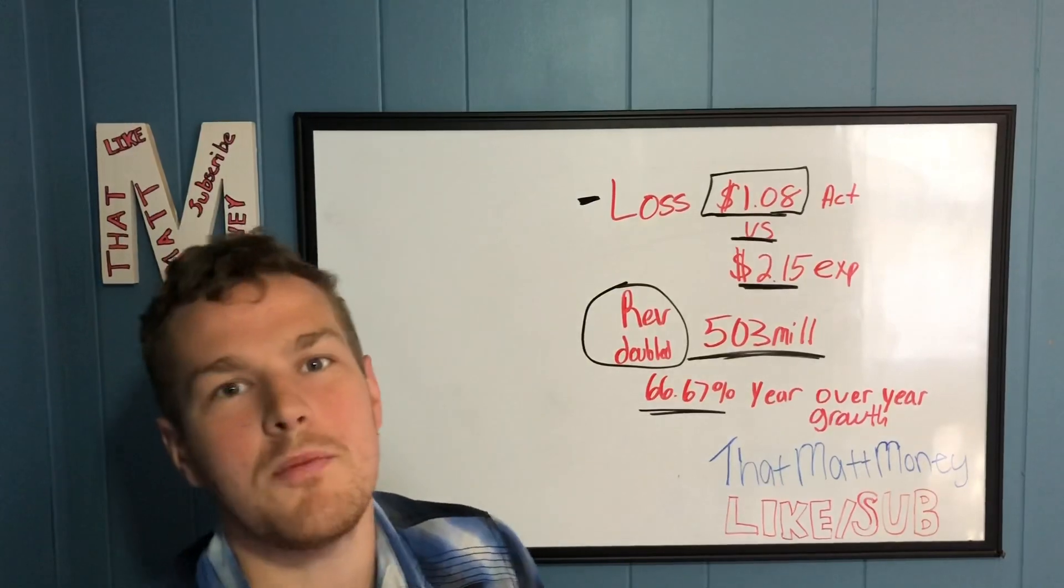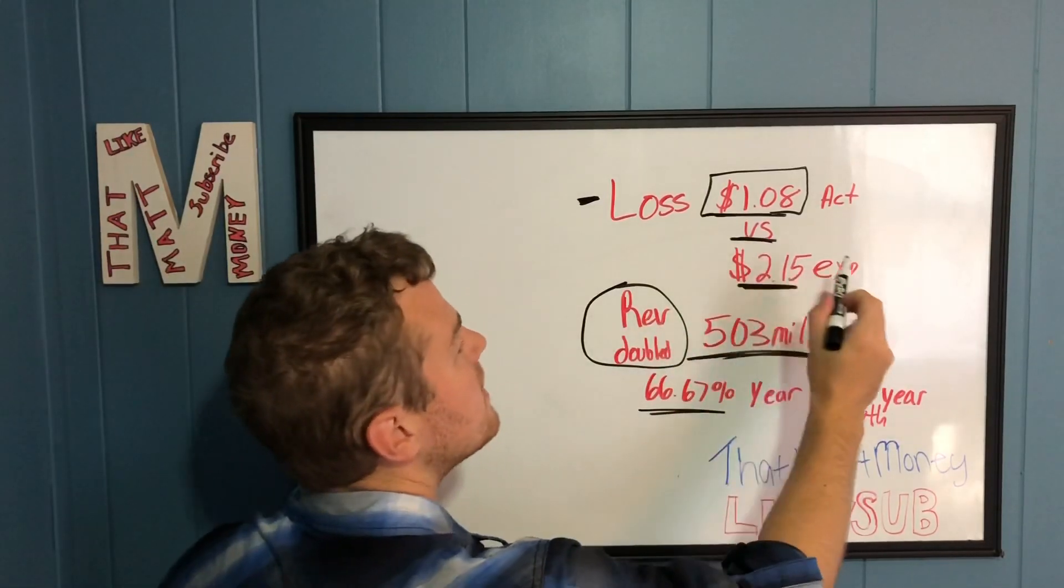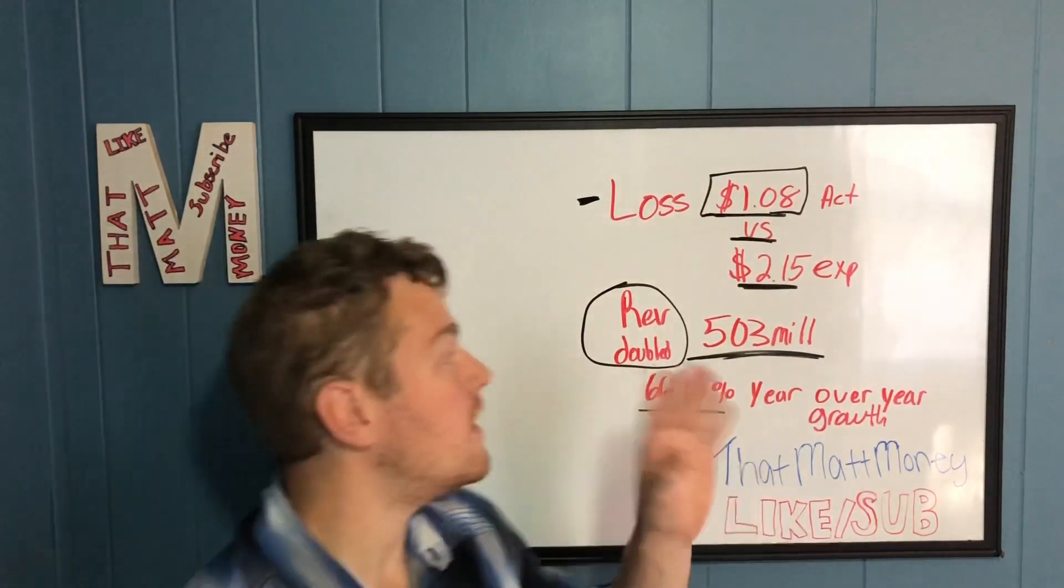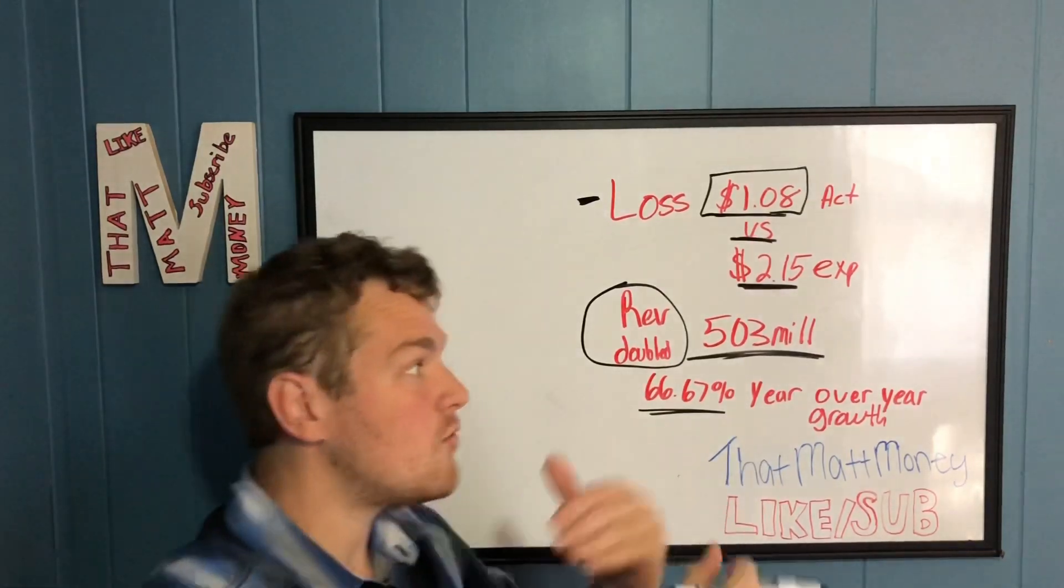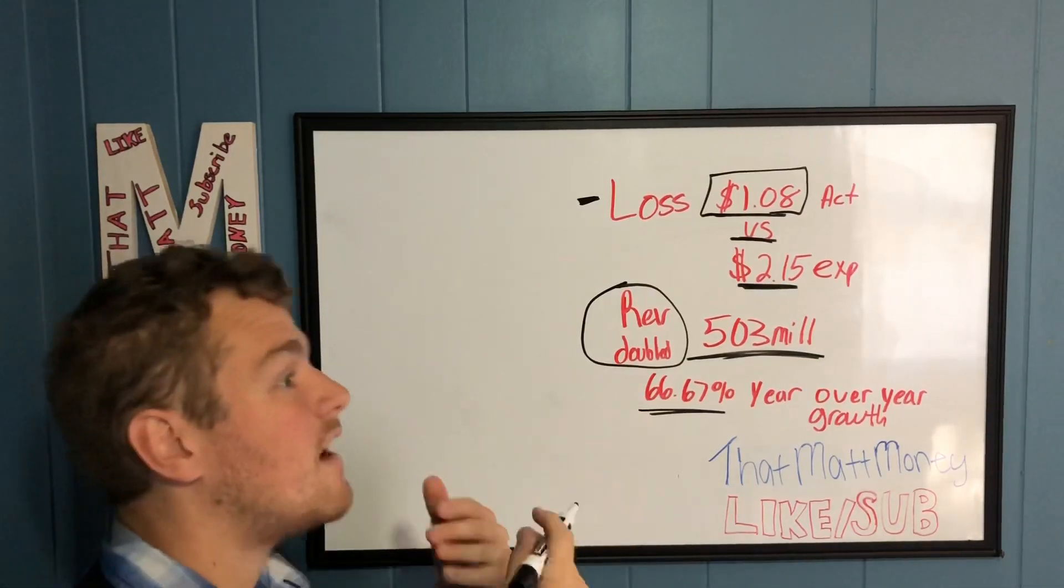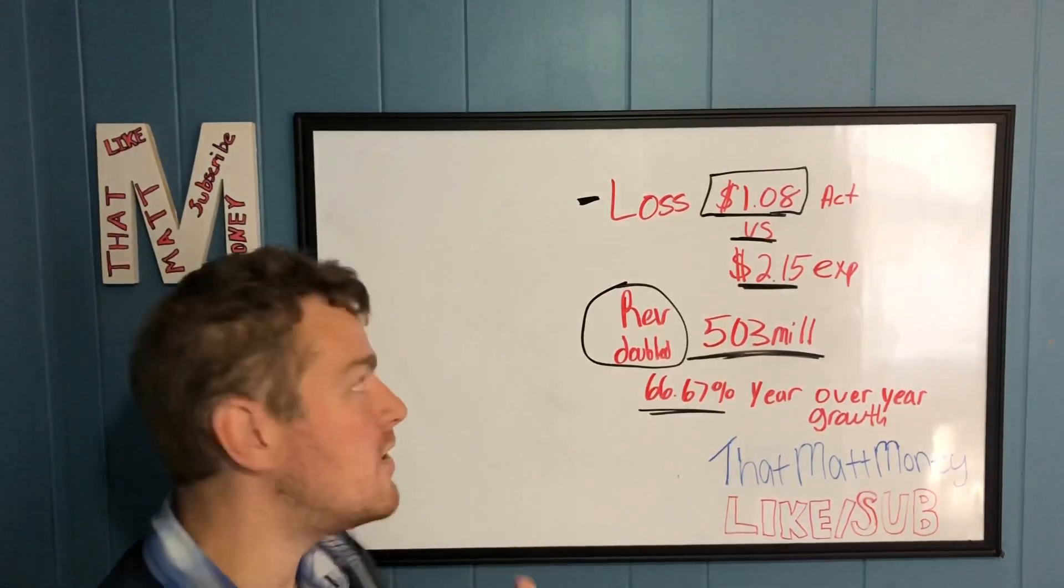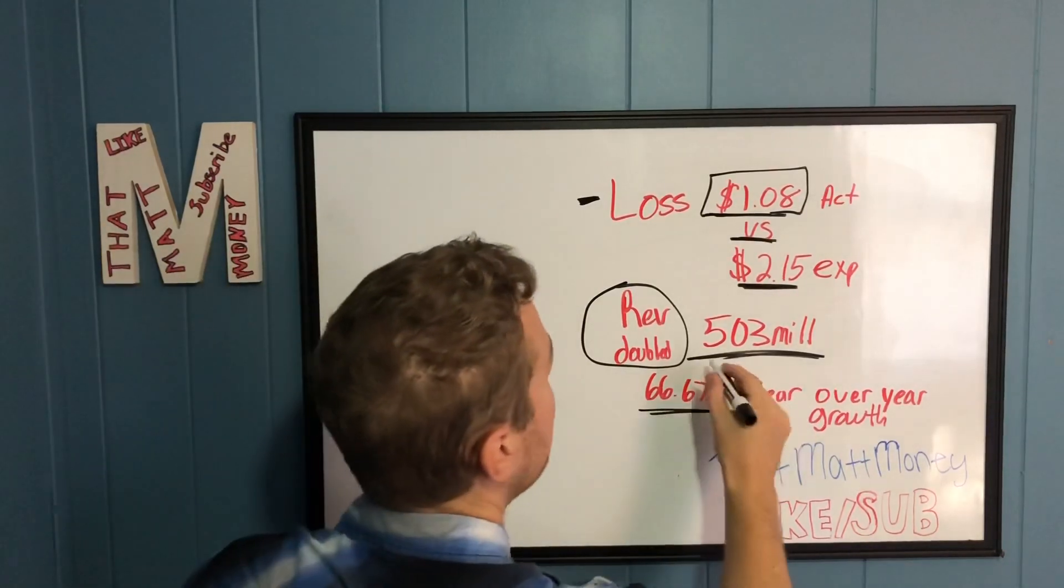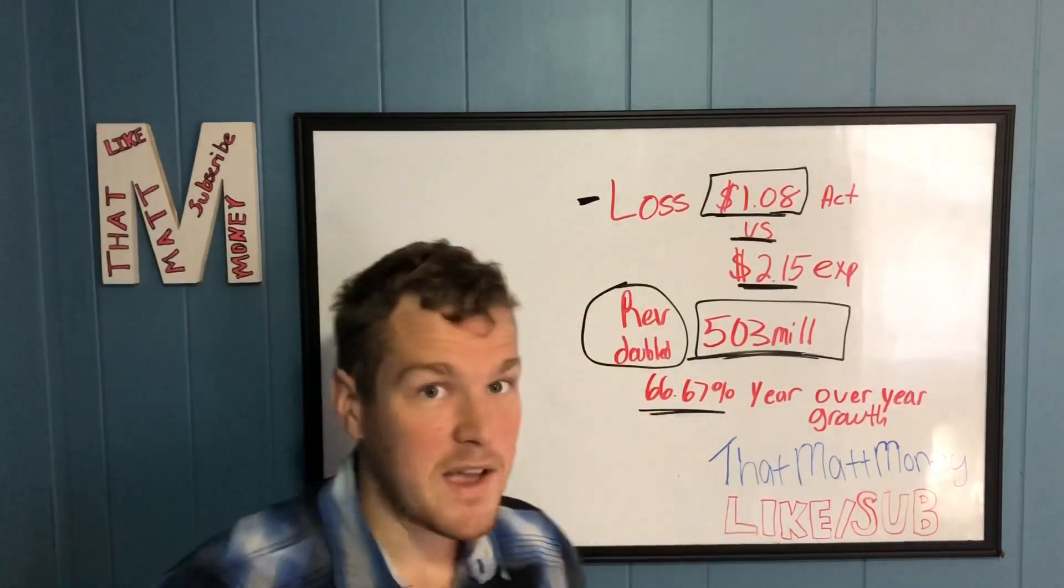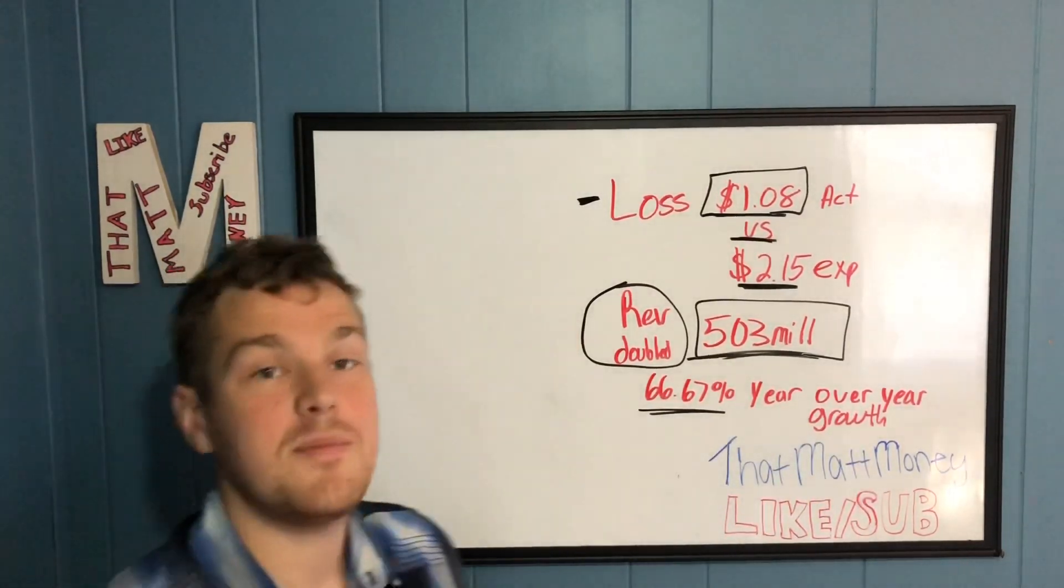What are the key details right now that are making NIO stock pop so much pre-market? The loss was one dollar and eight cents versus the expected two dollars and fifteen cents. So they're at a loss, but it was half of the loss that was expected. They're getting towards profitability a lot faster than expected, which is great. That means their operating costs are getting better and they're making more money on each vehicle sale. Their revenue doubled, 503 million in revenue. The amount they're losing is way less than expected. They have 66.67 year over year growth. Their growth has been phenomenal.